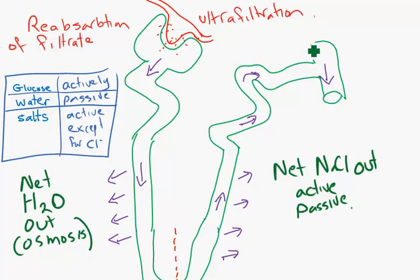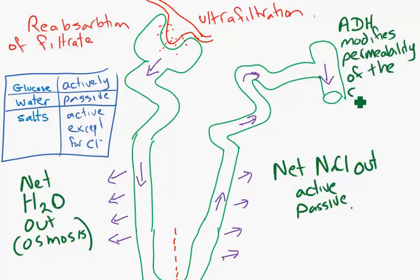And right at the end, we have the homeostatic function, where ADH, anti-diuretic hormone, modifies the permeability of the collecting duct. Now, this area is the only area where we get homeostasis occurring. The rest of it is just standard all the time.